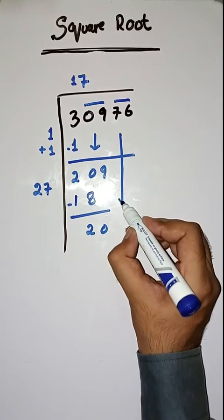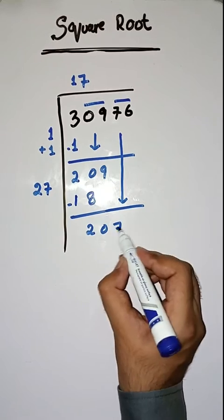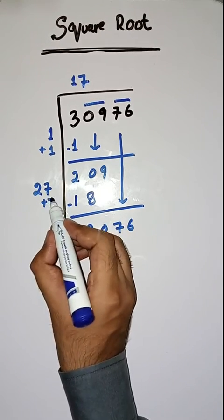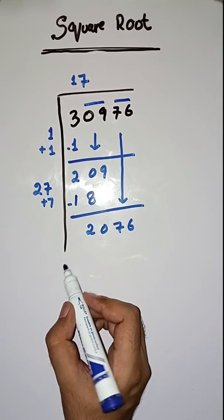Next pair is seventy-six. We will take it down. Here we will do twenty-seven plus seven, which is equal to thirty-four.